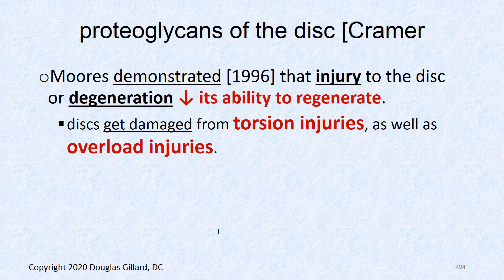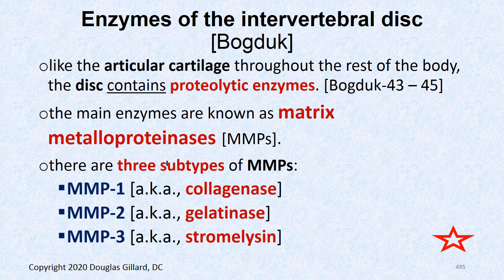Research by Farfan in 1966 demonstrated that injury to the disc or degeneration decreases its ability to regenerate. The disc can heal, and there are enzymes that can clean up damaged tissue. Discs are commonly damaged by torsion or twisting injuries and axial overload injuries — for example, falling on your tailbone or doing quarter squats with excessive weight.